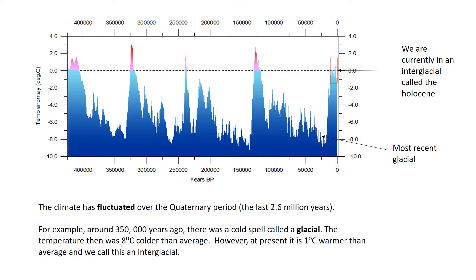At the present day, the temperature is currently 1 degree warmer than average. These warmer spells we refer to as interglacials. The most current interglacial that we're in now is called the Holocene.